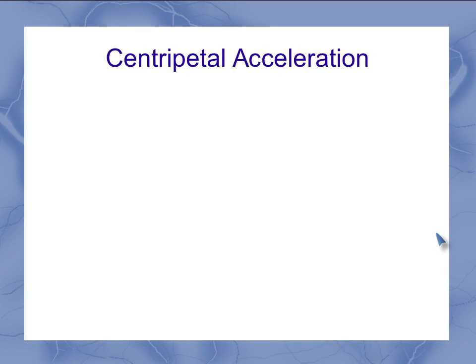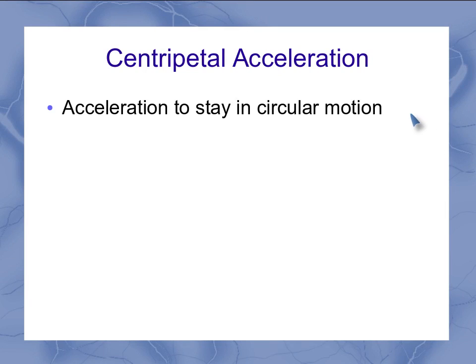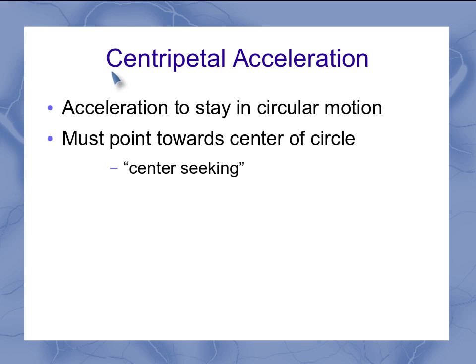So we're going to call this our centripetal acceleration. Now this is the acceleration needed in order to keep something moving in circular motion, and it must point towards the center of the circle. That's the direction part we found. And actually, that's where the word centripetal comes from. Centripetal means center seeking. So the center seeking acceleration helps keep something in circular motion.